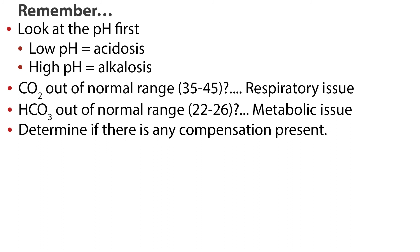Let's go over a review. Look at the pH first. If it is low, it indicates acidosis. If it is high, it indicates alkalosis. Next, look at the CO2. The respiratory system controls CO2, so determine if it is higher than 45 or lower than 35. Next, look at the HCO3, which is controlled by the kidneys. Is it less than 22 or greater than 26? Then determine if there is any compensation present.